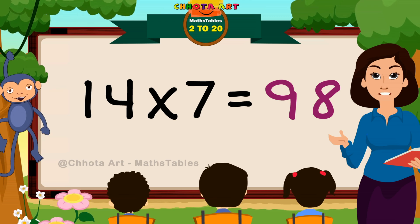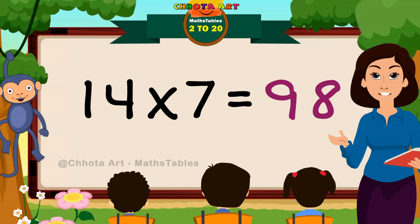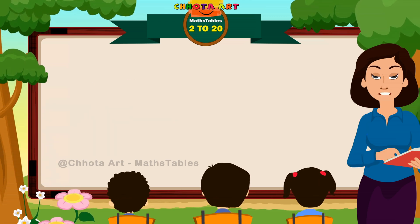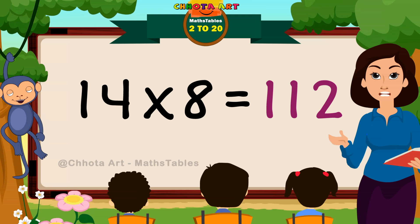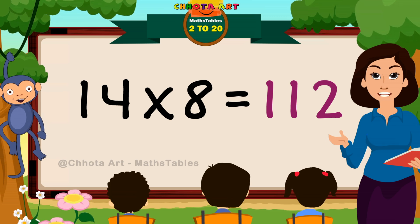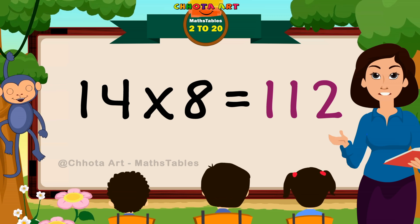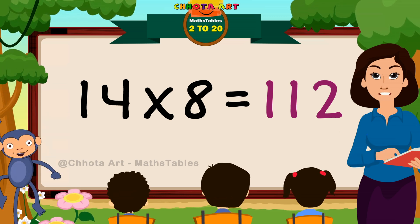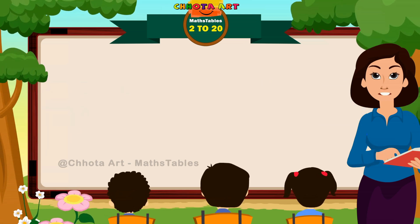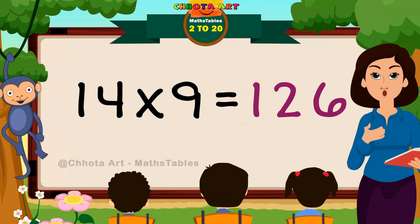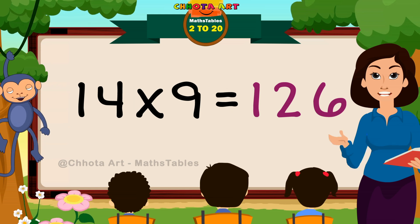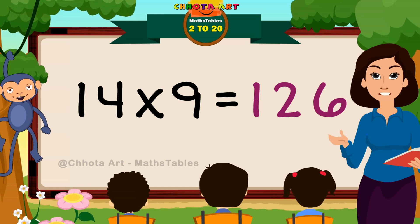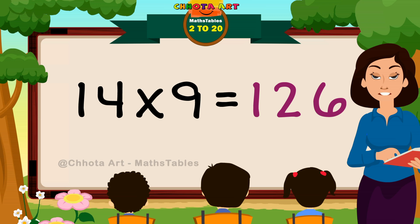14 sevens are 98. 14 sevens are 98. 14 eights are 112. 14 eights are 112. 14 nines are 126. 14 nines are 126.